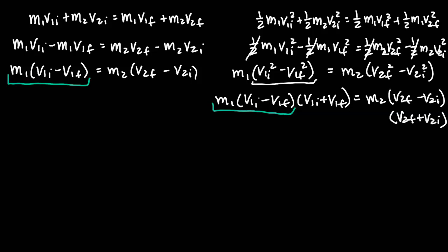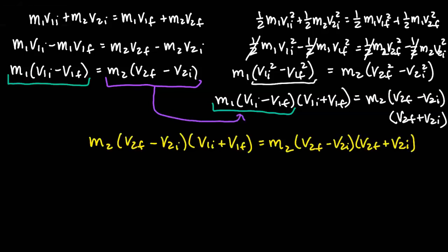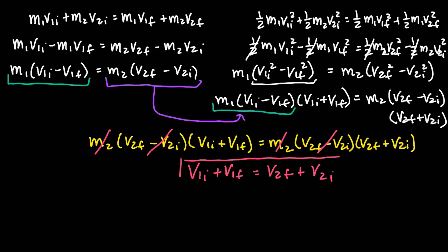You'll notice that the factored momentum term looks just like one of the factors in the kinetic energy expression. We substitute that in, and although it looks messy at first, it simplifies quickly. The m2 terms cancel out, and (v2_final minus v2_initial) cancels out as well, leaving us with v1_initial plus v1_final equals v2_final plus v2_initial. That's our shortcut equation. There's a third method that's even faster — check out my next video for that.